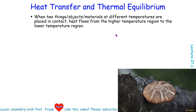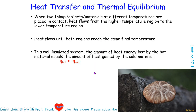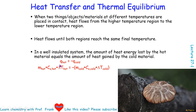When we place two objects with different temperatures, heat flows from the higher temperature region to the lower temperature region until both regions reach the same final temperature. In a well-insulated system, the heat lost by the hot material equals the heat gained by the cold material. The heat can be calculated using the product of mass, specific heat capacity, and temperature change.